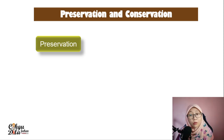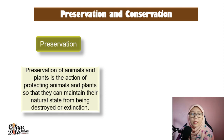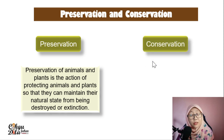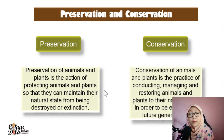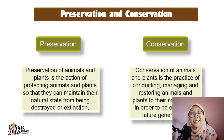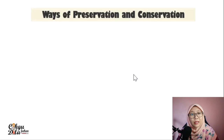Before that, you need to know the definitions of preservations and conservations. Preservation of animals and plants is the action of protecting animals and plants so they can maintain their natural state from being destroyed or going extinct. Conservation of animals and plants is the practice of managing and restoring animals and plants to their natural state in order to be enjoyed by future generations.